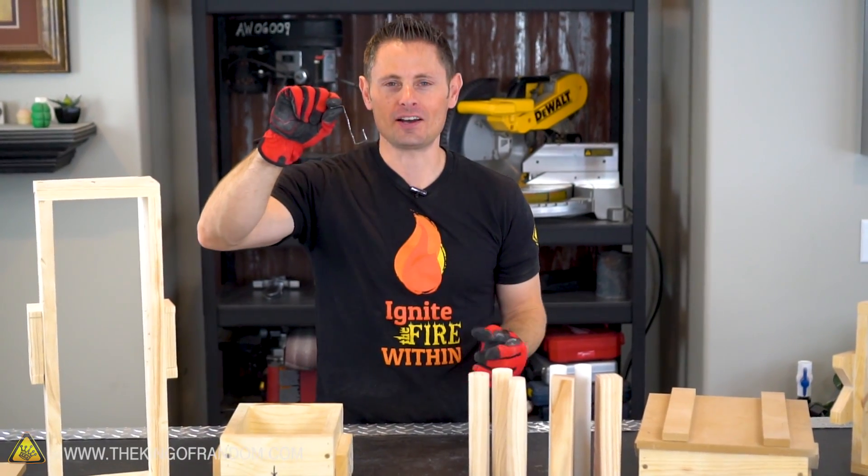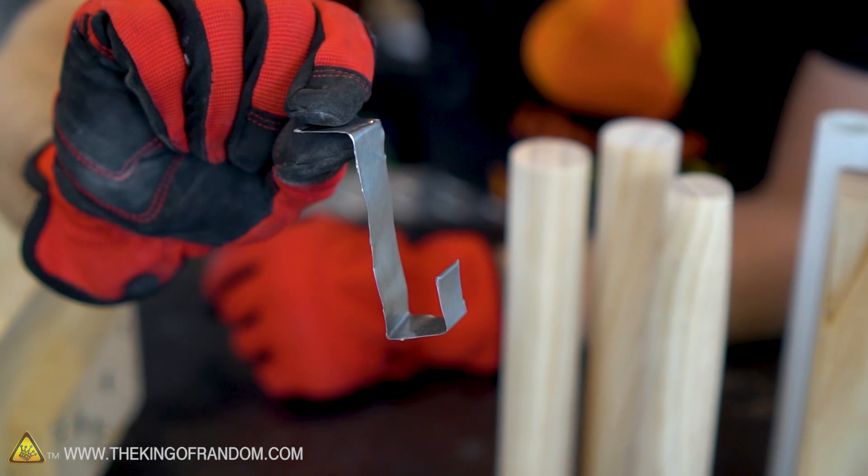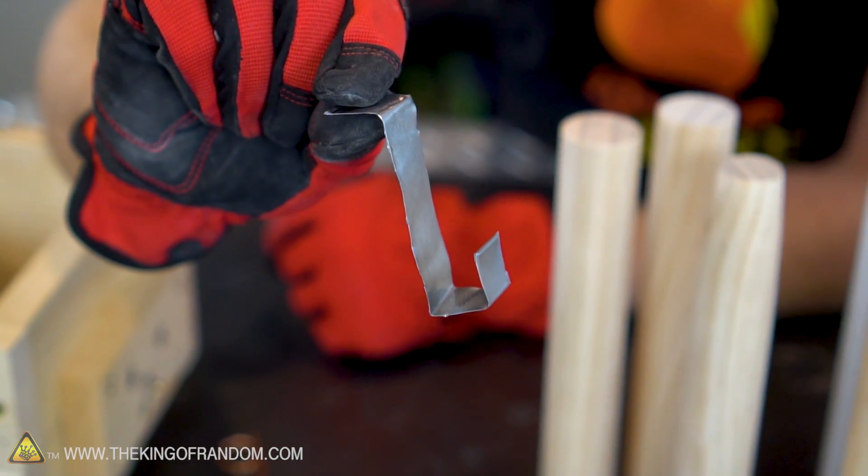This funny-looking piece of metal here is a strip that I cut from the bottom of an Altoids tin, and it's a tool we can use to carve out some channels or gates leading to the castings we're going to make.